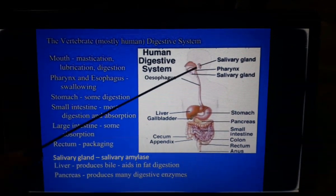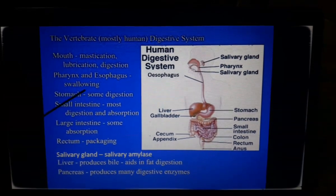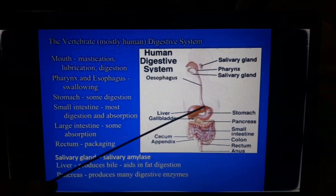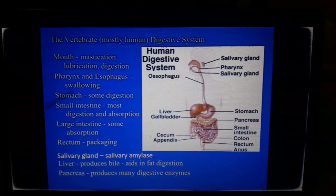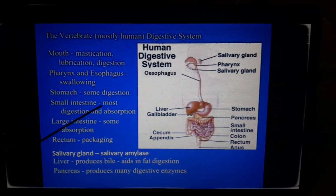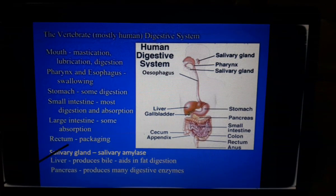Pharynx and esophagus help in the swallowing of the food. This esophagus passes the food from the mouth to stomach. The stomach does some digestion. Small intestine does most digestion and absorption. Large intestine does some absorption.